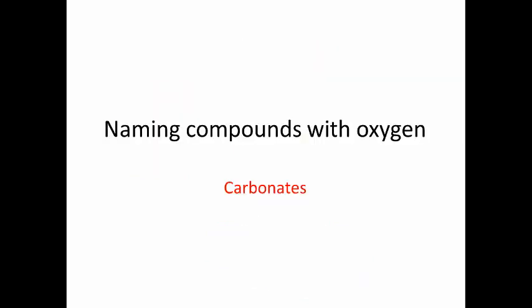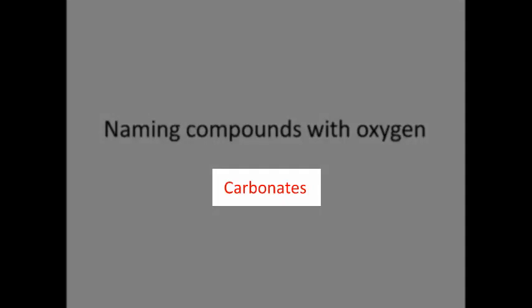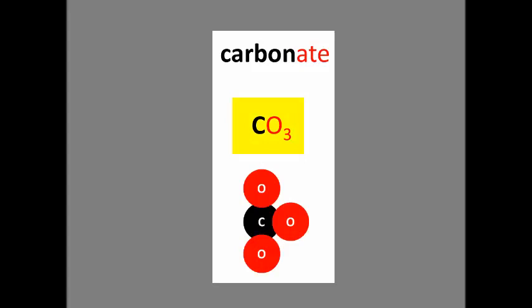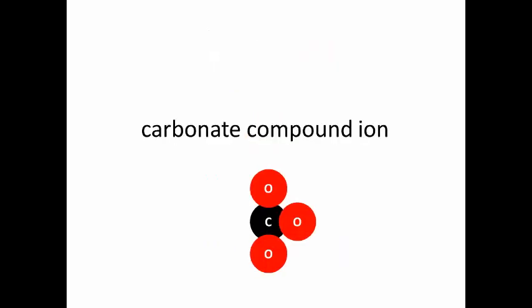Let's take another family of chemicals which has oxygen in. Carbonates. Whenever you hear the word carbonate, you know that there's CO3 inside that compound. Carbonate, like sulfate, is a group that acts like a unit. CO3 bonds together to make a compound ion called carbonate and that acts like one unit in a way.